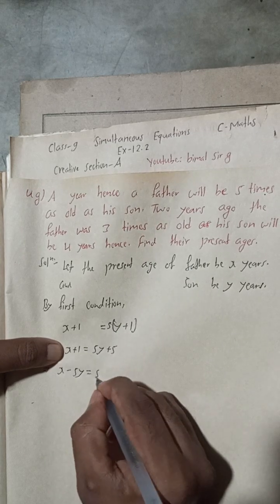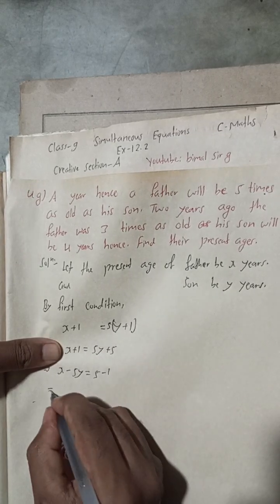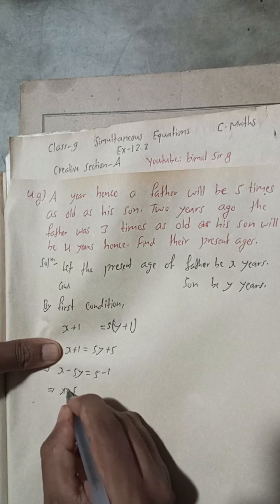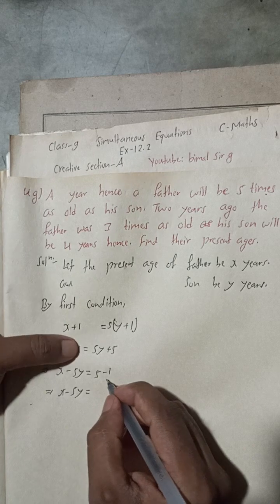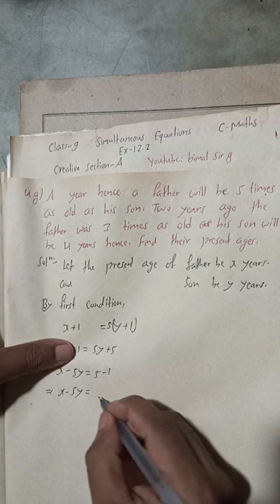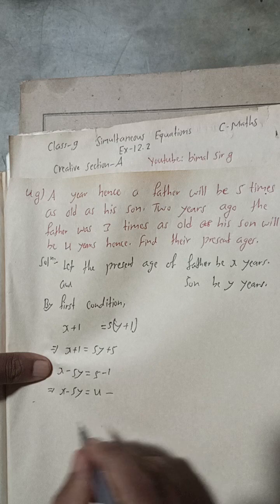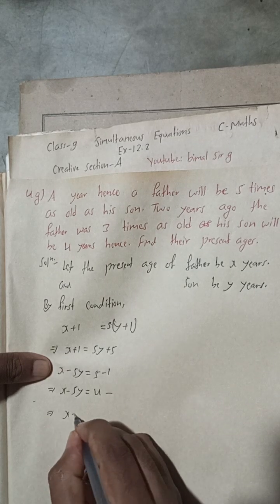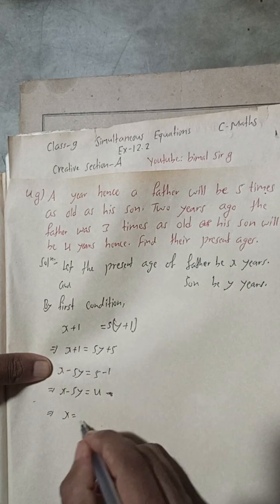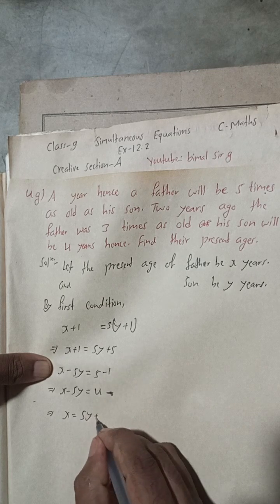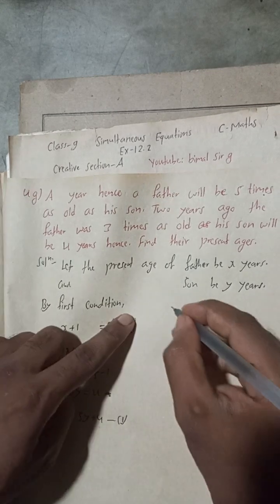So x plus one equals five times y plus one, which gives x plus one equals five y plus five. This means x minus five y equals five minus one, which is four. So equation one is: x equals five y plus four.